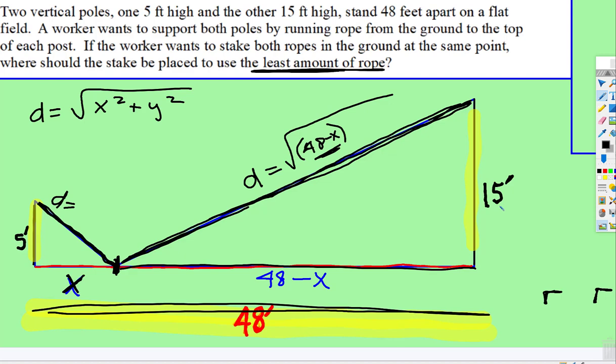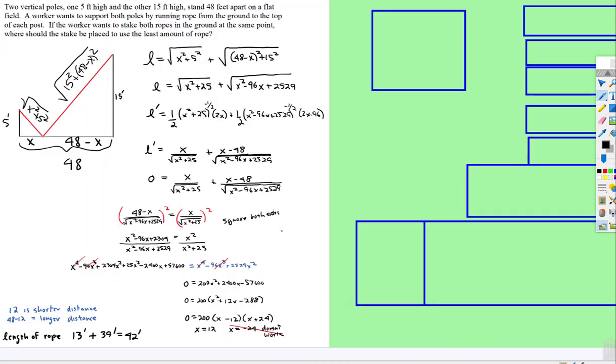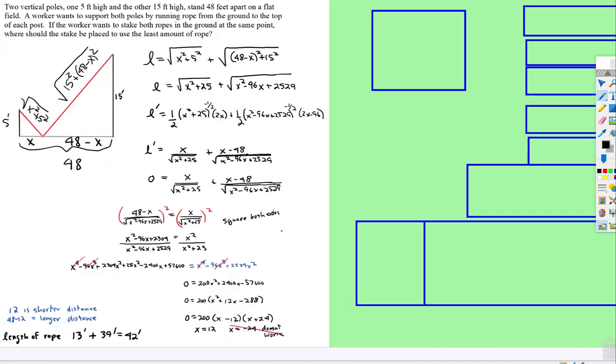And then that height is 15 feet, but that height is also y. I think I went ahead and put y, nope, I went ahead and put the 15. So, this is going to be 15 squared, and on this side, this is just going to be x squared plus 5 squared.